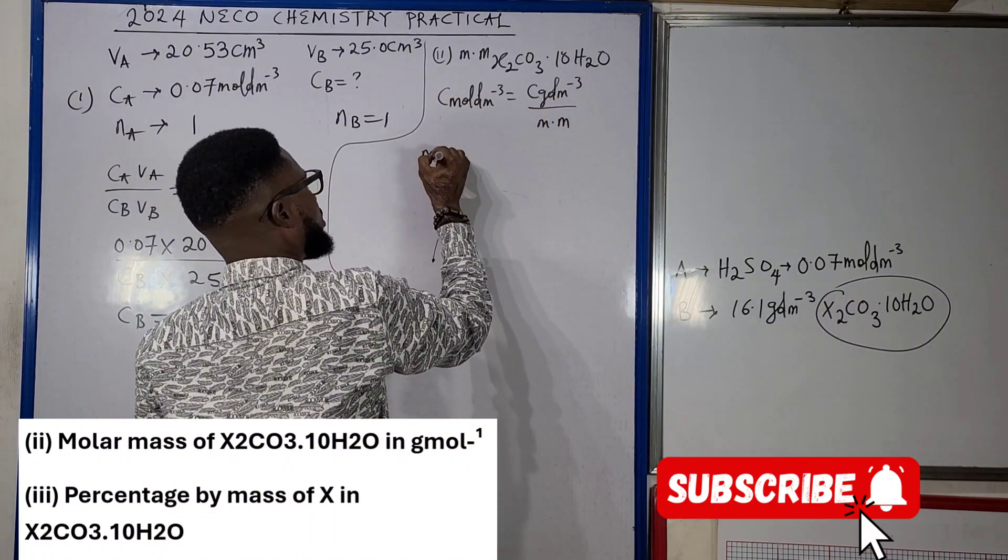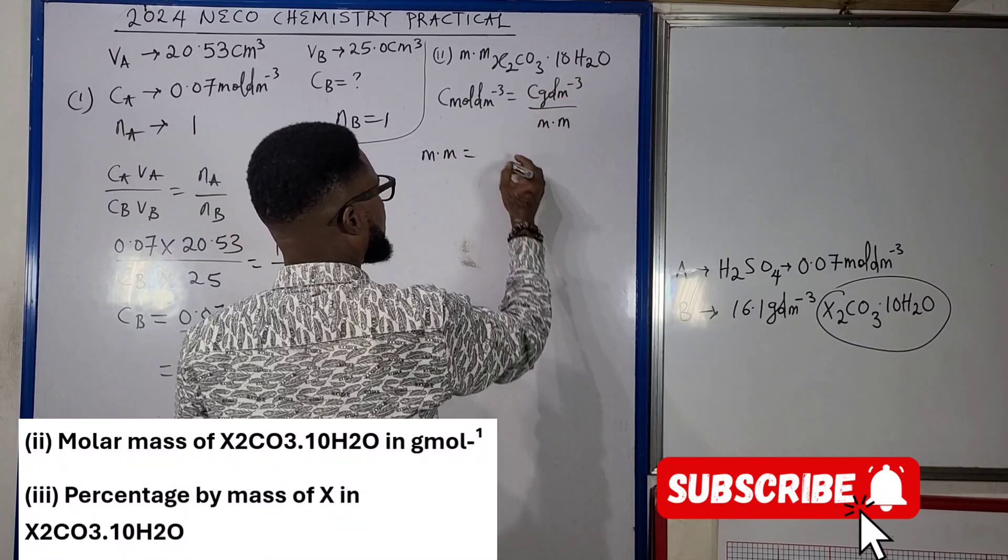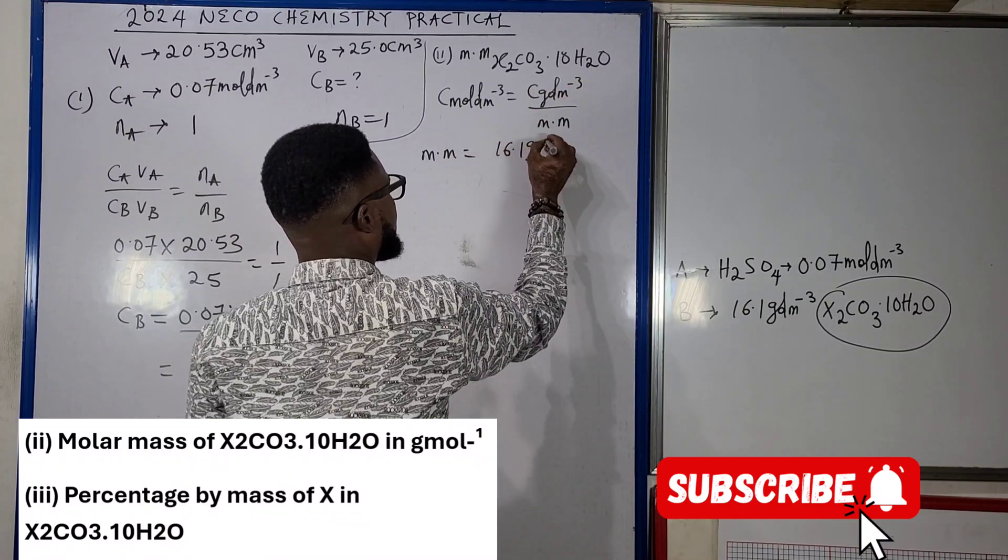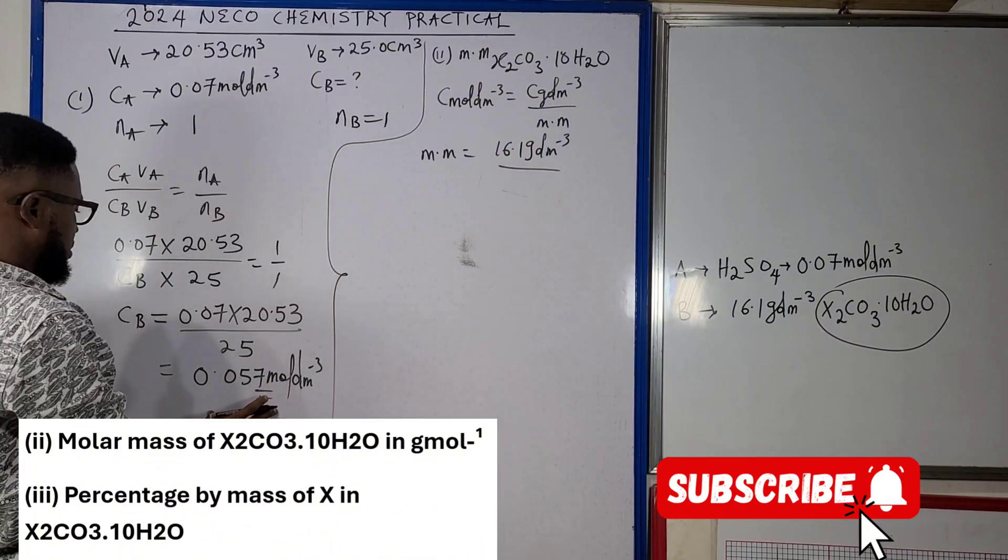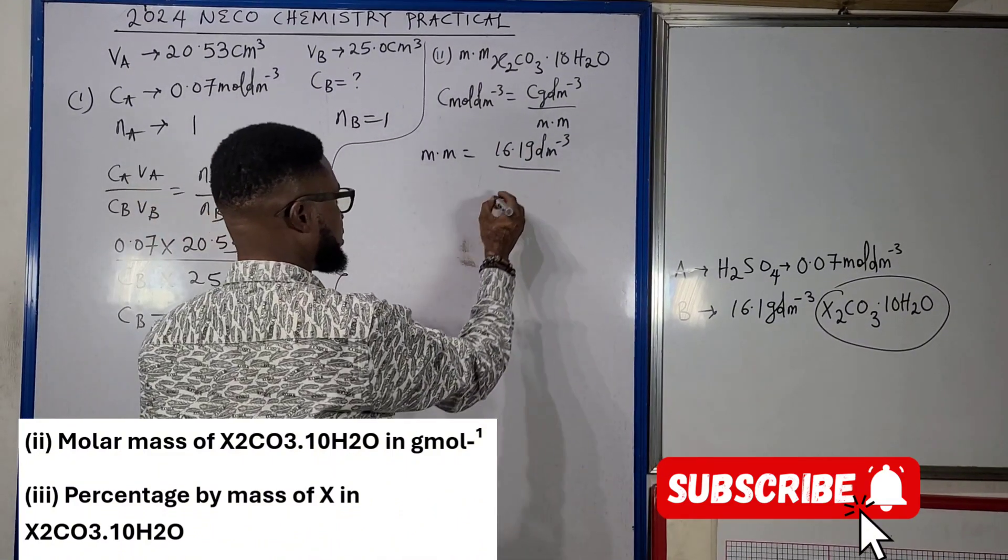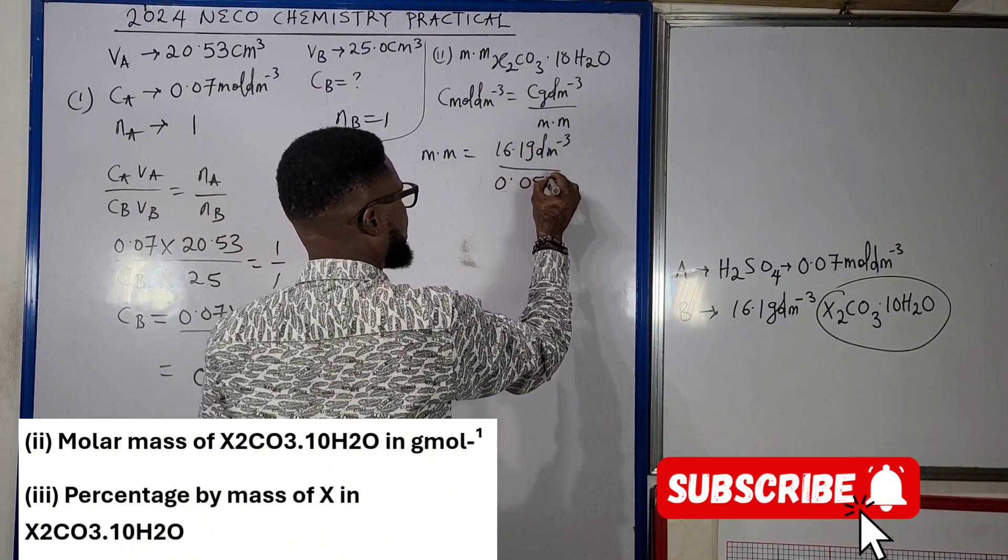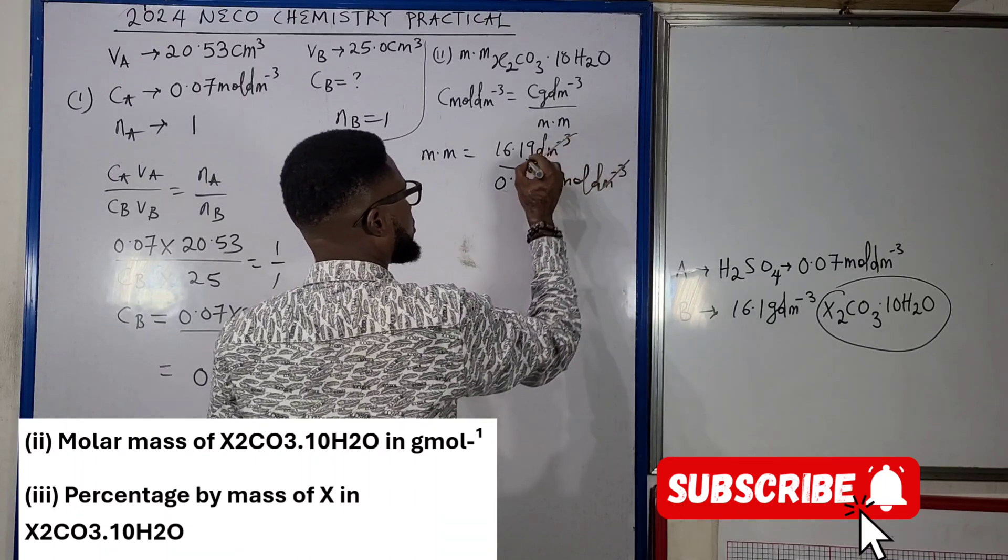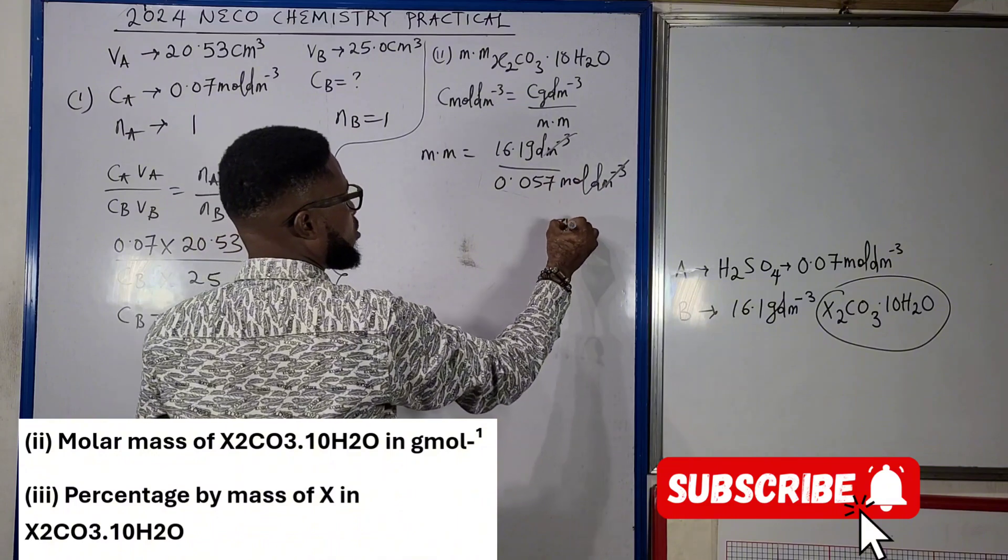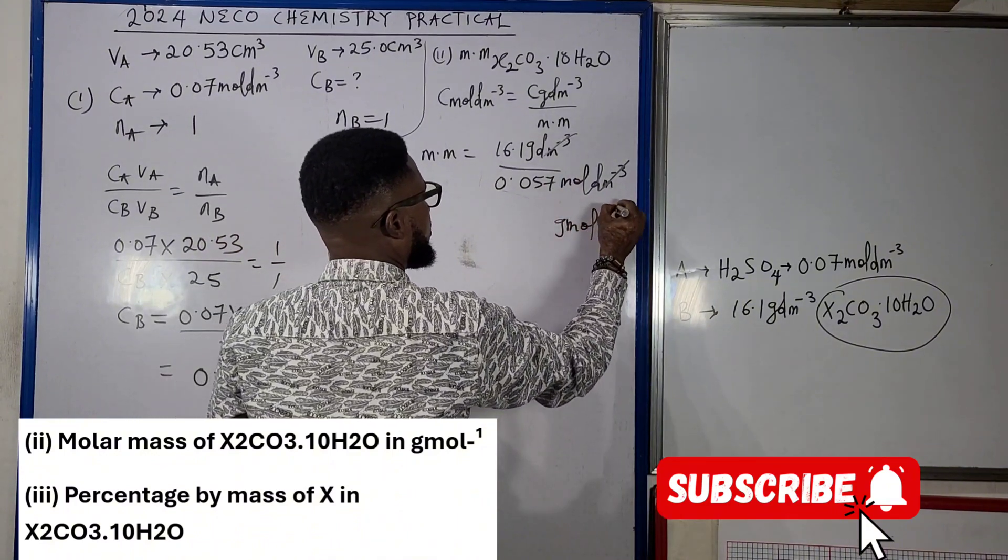Recall that concentration in mole per dm³ equals to concentration in gram per dm³ divided by molar mass. So molar mass will be concentration in gram per dm³, which is 16.1 gram per dm³, divided by concentration in mole per dm³, which is 0.057 mole per dm³.